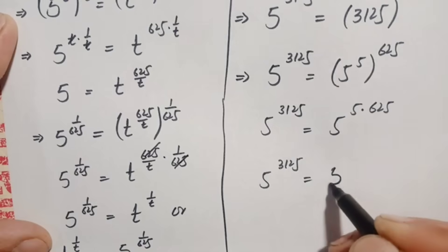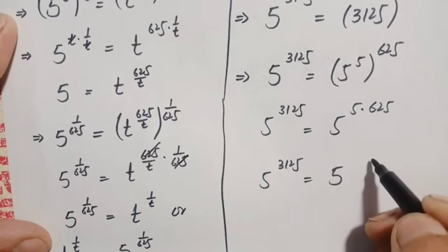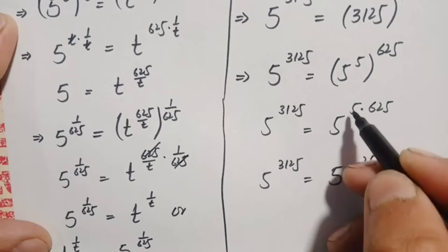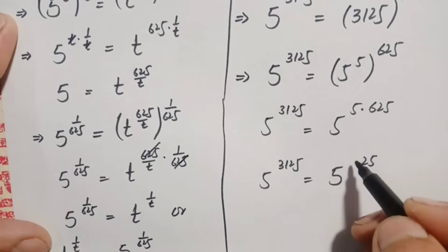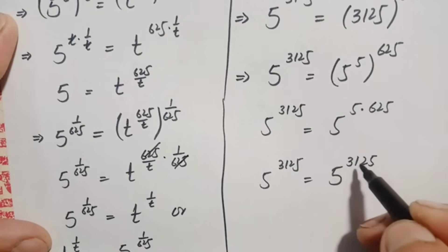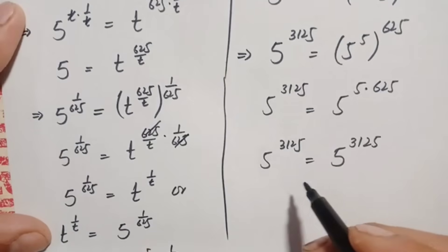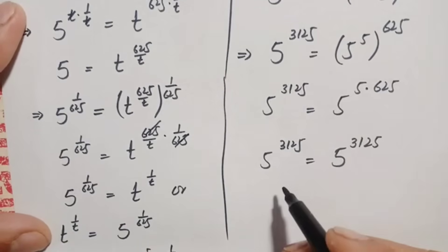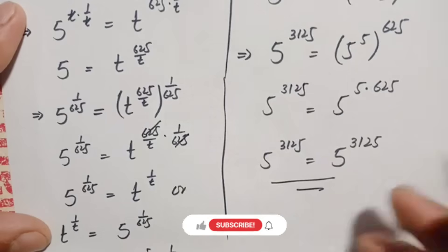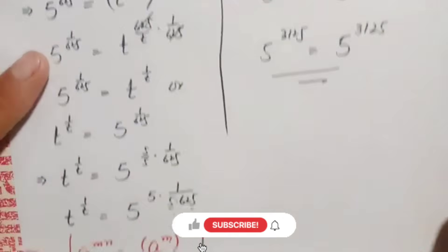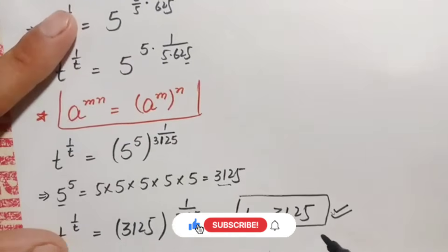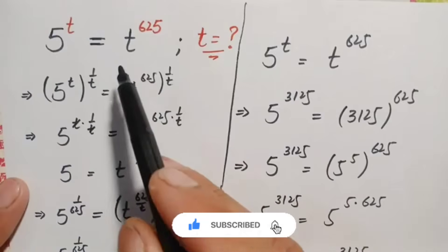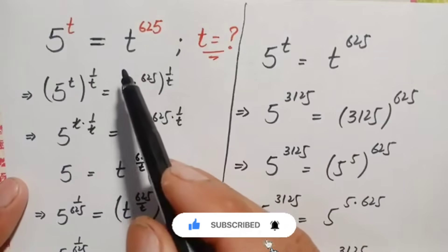Now looking at both sides: the left-hand side is 5 raised to power 3,125 and the right-hand side is also 5 raised to power 3,125. Both sides have the same base and the same power. Since both numbers are the same, this confirms that t equals 3,125 is the exact and correct value of t in this interesting exponential math problem.